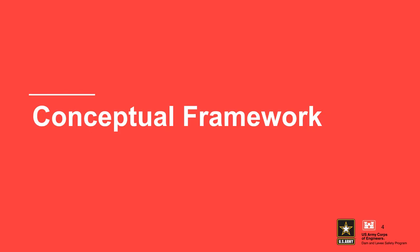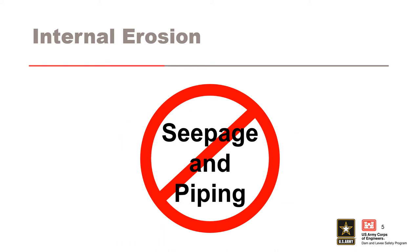Internal erosion has commonly been described as seepage and piping in the literature and by practitioners, but this poorly characterizes internal erosion. All dams and levees have some seepage as the impounded water seeks paths of least resistance through the embankment and foundation, and should be controlled to prevent erosion or damage to concrete structures. Seepage becomes a concern if it is carrying material with it. Piping is actually the culmination of a process of internal erosion in which a number of phases must occur and be sustained in order that a pipe develops through the embankment or foundation, allowing the passage of considerable quantities of water which may lead to a breach.